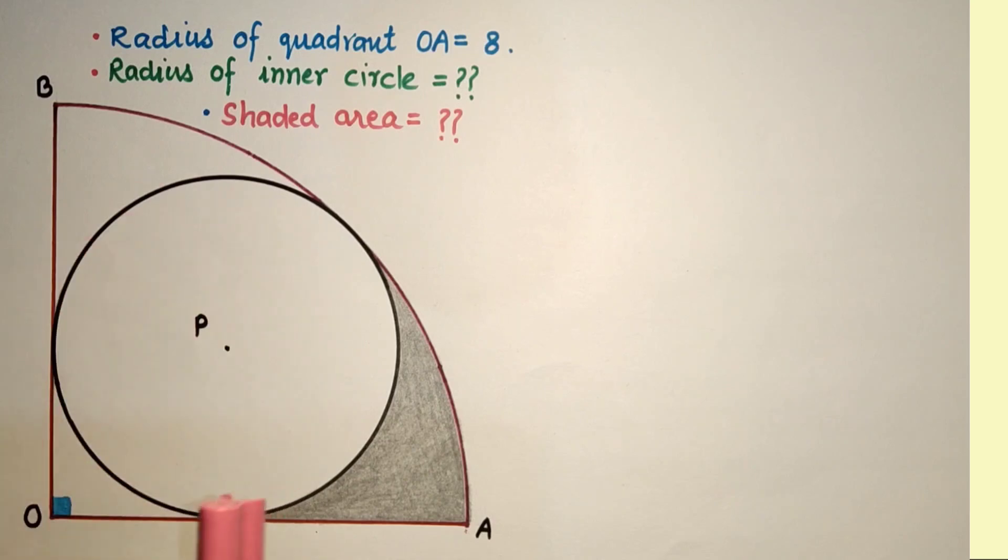P is the center of the circle. The inner circle touches the quadrant at 3 points. The radius of quadrant OA is given as 8 units. We have to find the radius of this inner circle and this shaded portion's area.